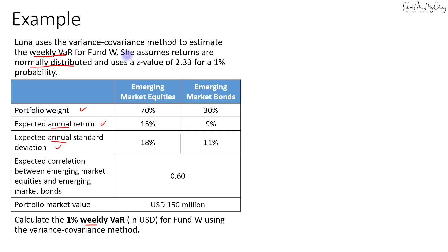First, we have to calculate the expected return and the expected standard deviation for Fund W. Let's first calculate the expected return of the portfolio. We will take the weightage for each asset class: 70% multiplied by 15% return, plus 30% into emerging market bonds for a return of 9%. This gives us 13.2% per annum.